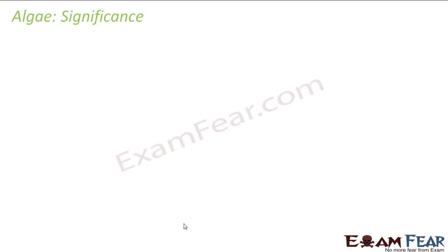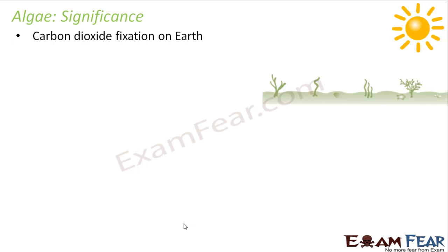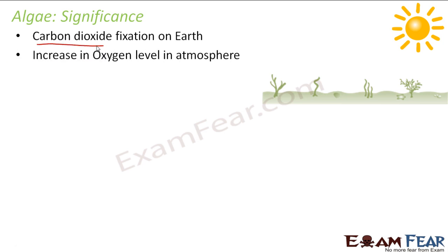Why do we need to classify algae as a separate group? What are the advantages of algae? The first advantage is carbon dioxide fixation on earth. The most basic characteristic of algae is that they are autotrophic — they can perform photosynthesis in presence of sunlight. In photosynthesis, carbon dioxide is utilized along with water and sunlight to produce food in the form of glucose. So algae help in carbon dioxide fixation and maintain the balance of carbon dioxide on earth.